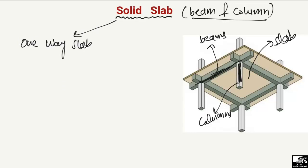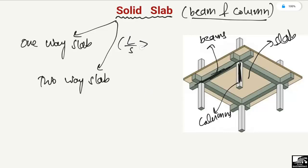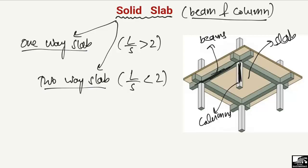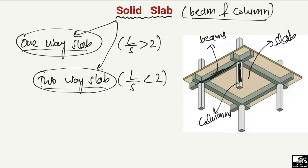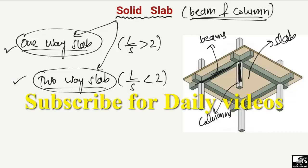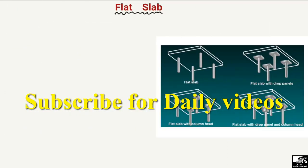There are two subtypes of the solid slab: one-way slab and two-way slab. The main difference is the dimension ratio. When the longer-to-shorter span ratio is greater than two, such a slab is known as a one-way slab. When this ratio is less than two, it is called a two-way slab. In a one-way slab, main reinforcement is provided only in the shorter direction, while in a two-way slab, main reinforcement is provided in both directions.